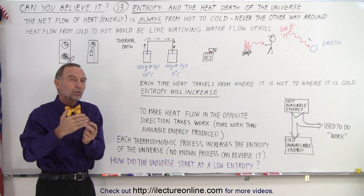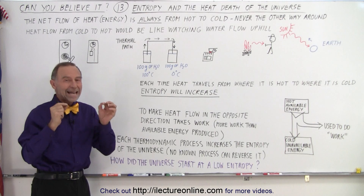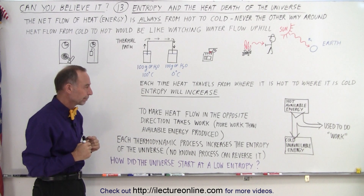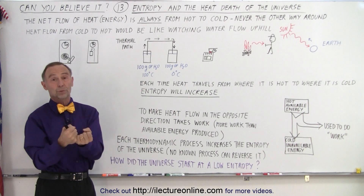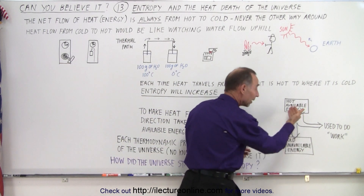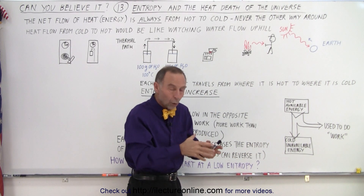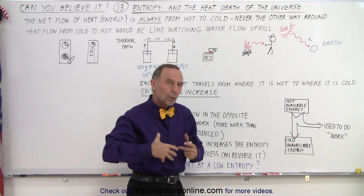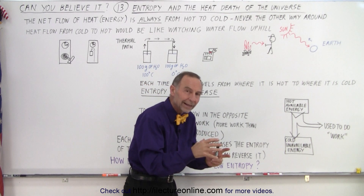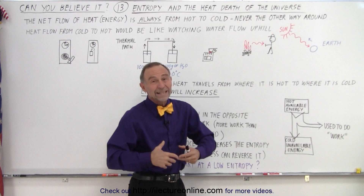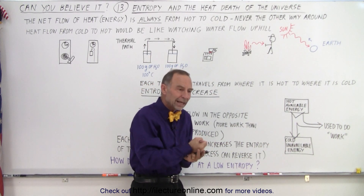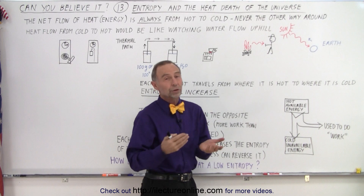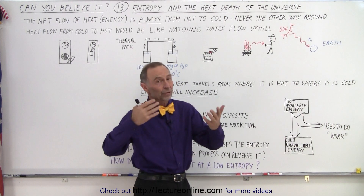That process produces an increase in entropy. Anytime there is heat flow from where it's hot to where it's cold, the entropy in the universe will go up. To make heat flow in the opposite direction requires work — for example, refrigerators take cold air, pull heat out to make it even colder, and put that heat into a warm kitchen. That requires work, and more work is required than the energy made available. So even though we can force the reverse of the process, it requires additional work, and the net result is that the entropy of the universe will continue to go up.